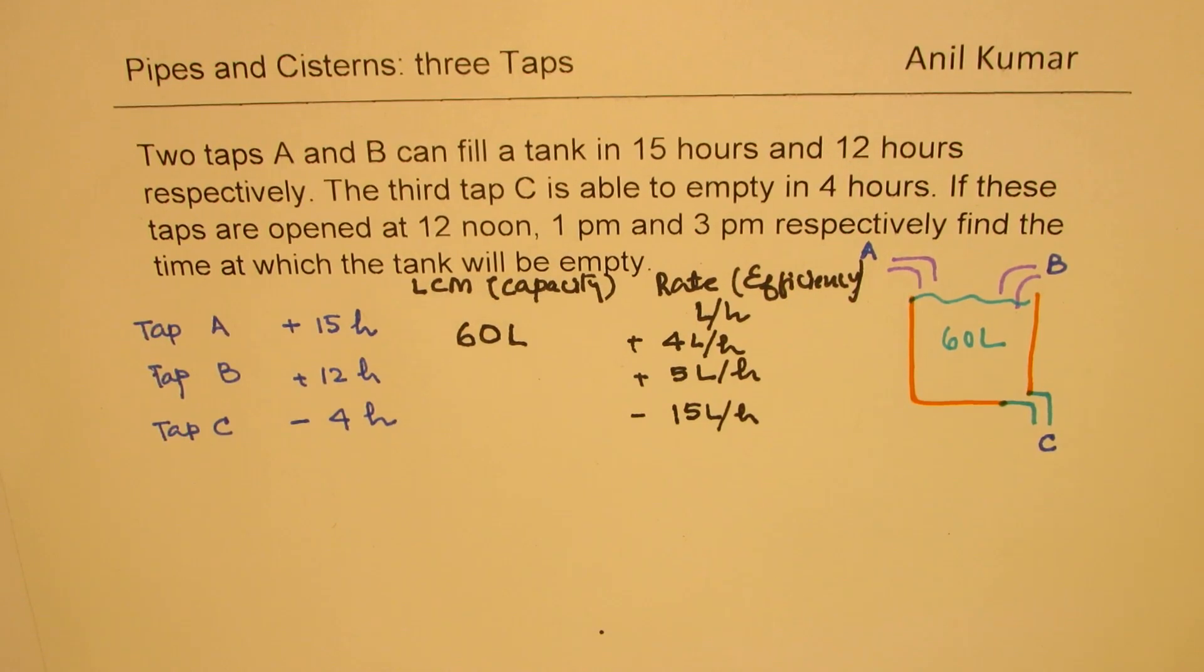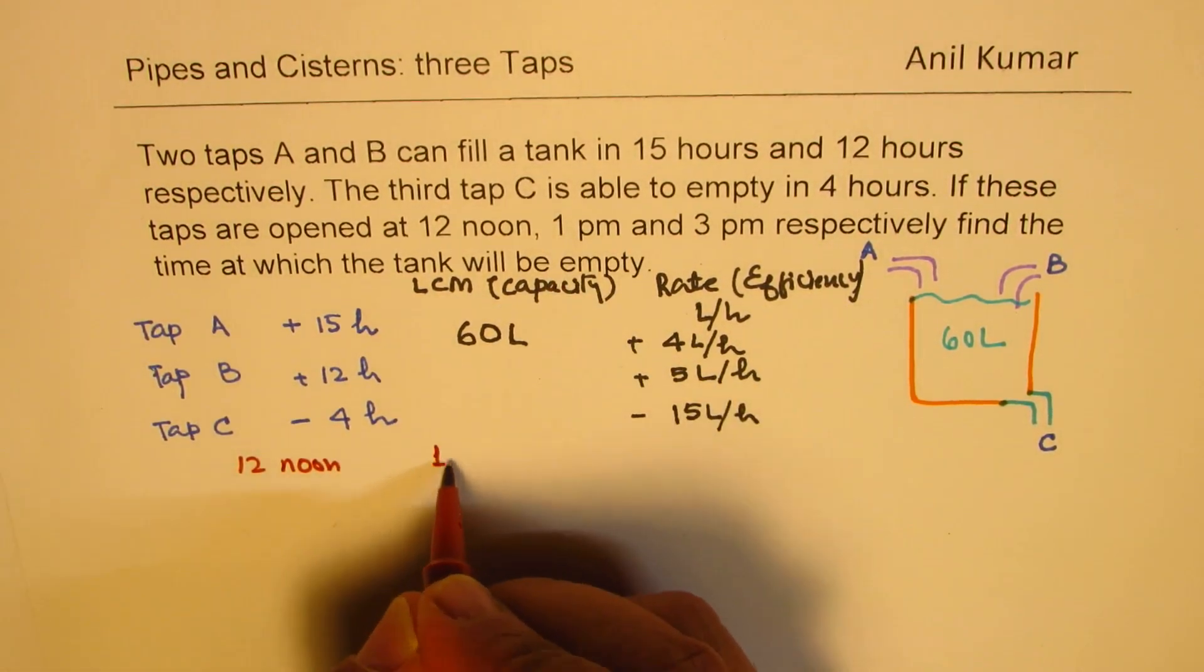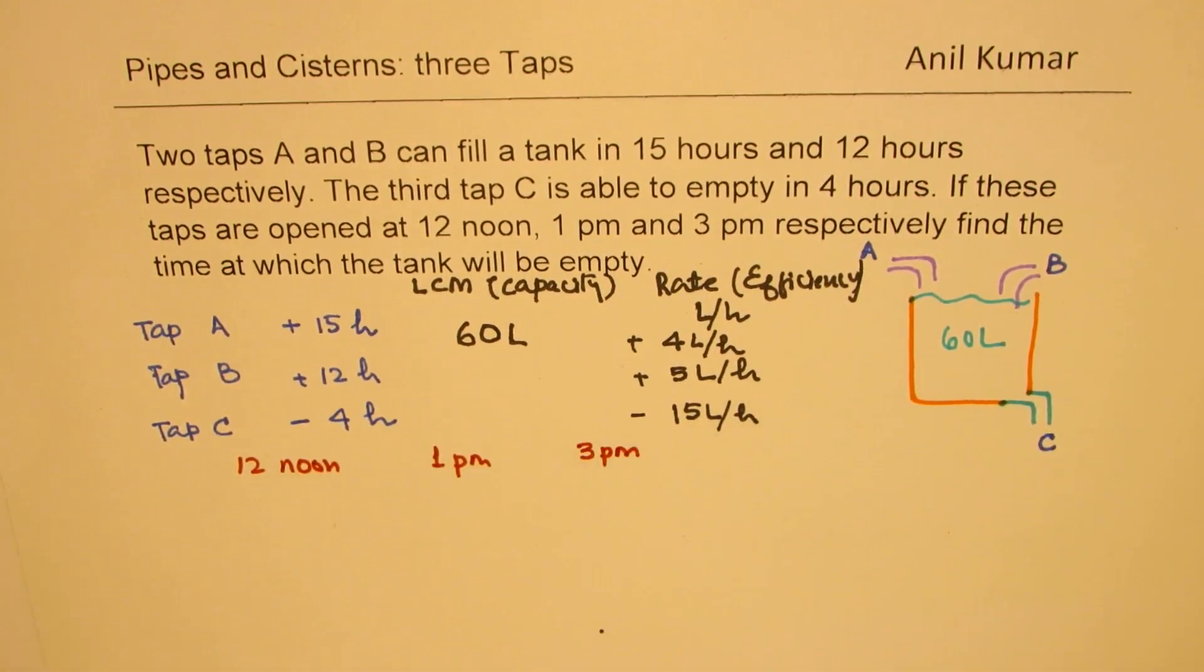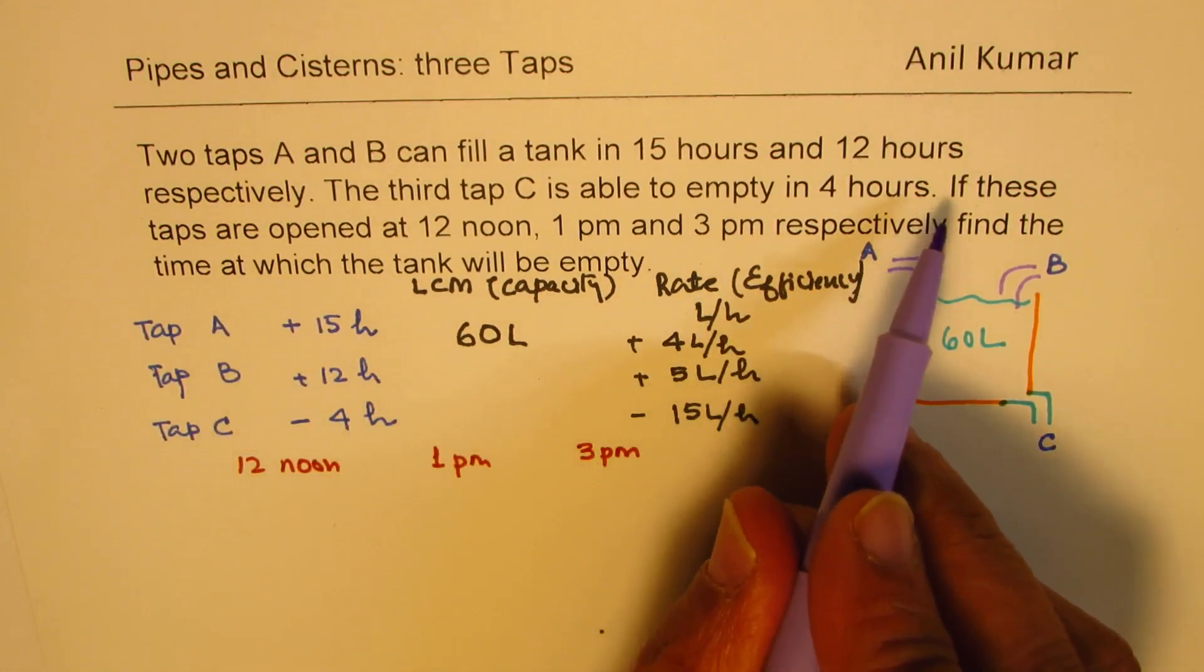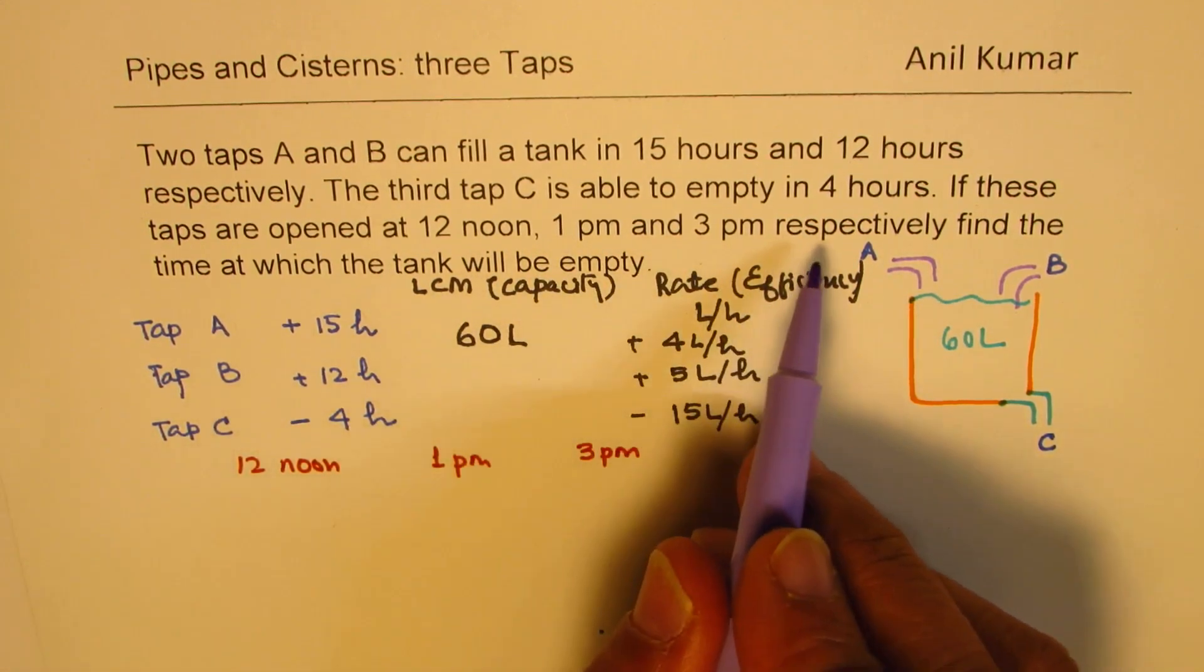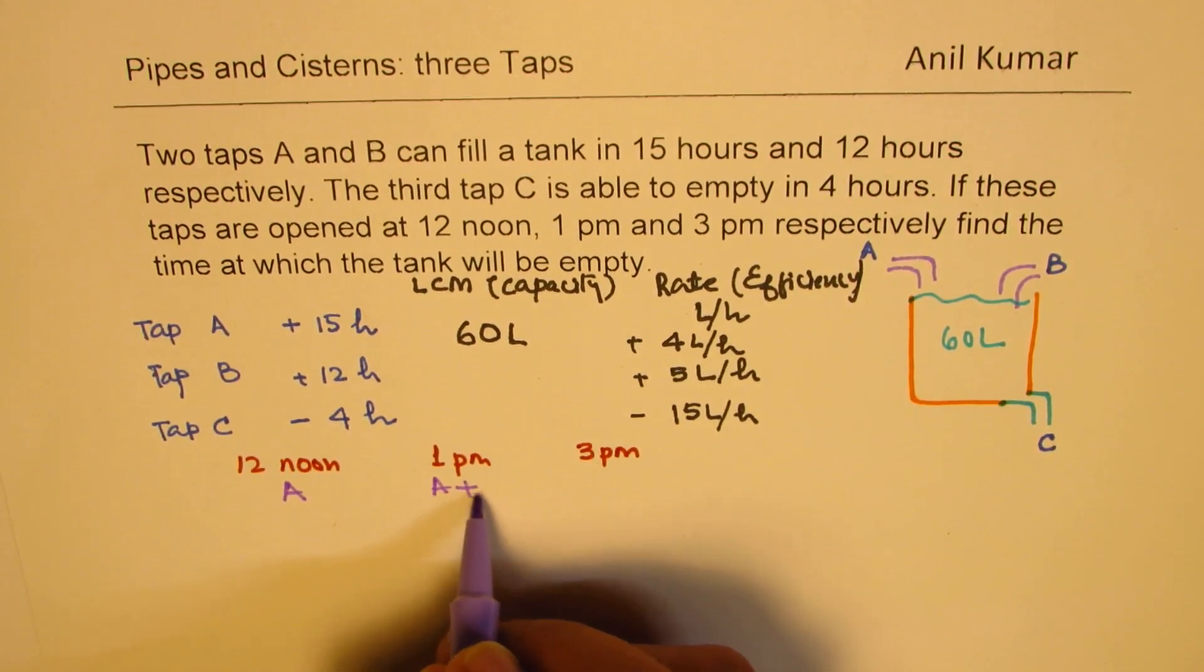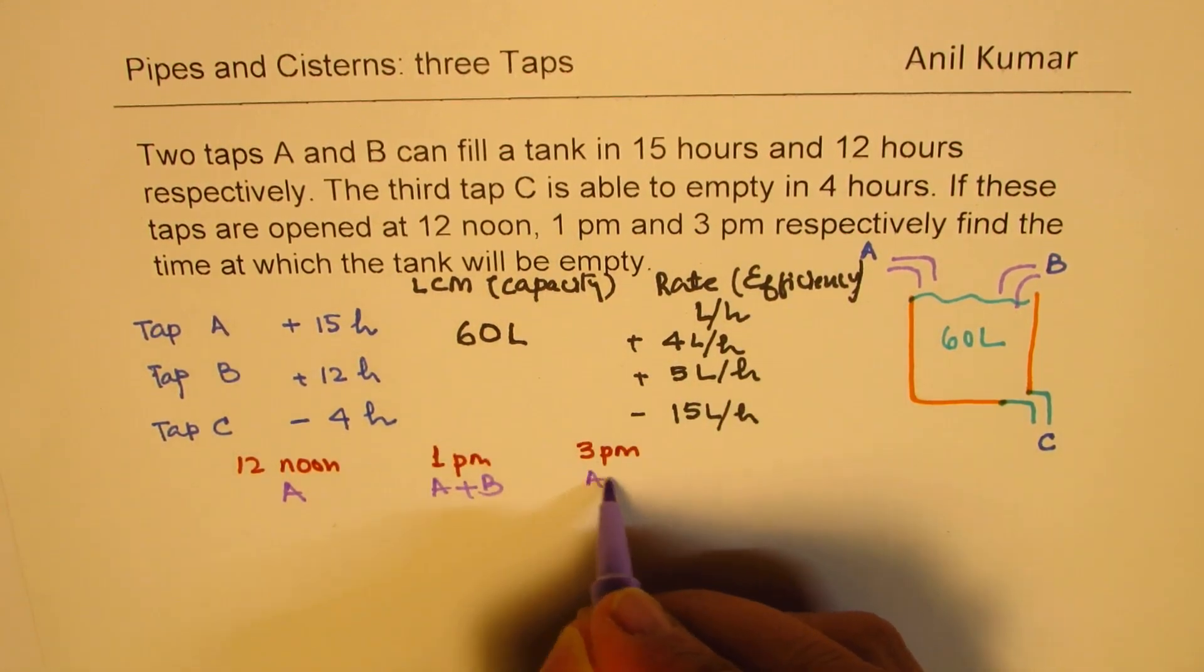Now another question. We are starting the whole operation at 12 noon. So this is 12 noon. And then at 1 p.m., things change. And then further, they change at 3 p.m. So what is happening here? At 12 noon, tap A is open. At 1 p.m., A is already open and we open up B also. At 3 p.m., C is also open. So all 3 are open here.